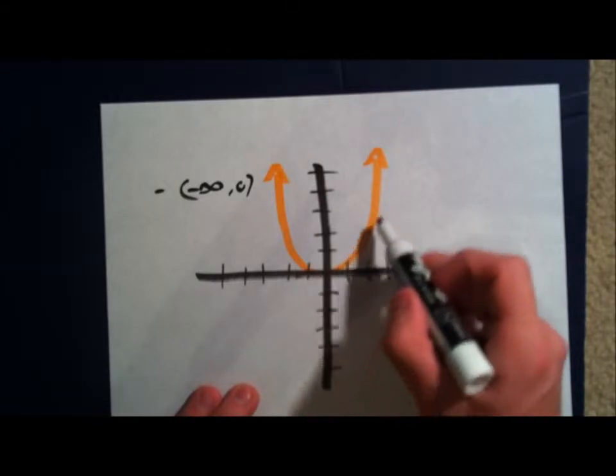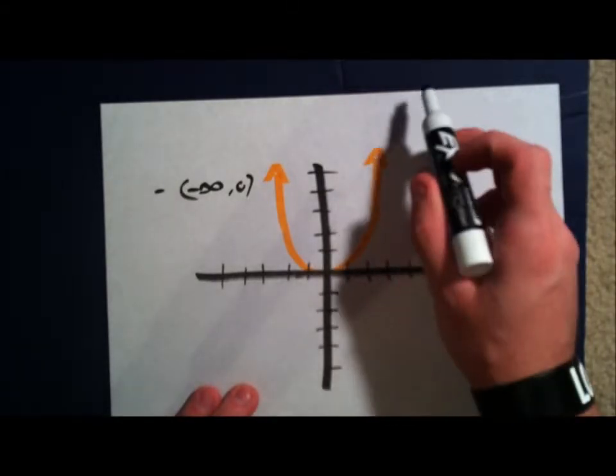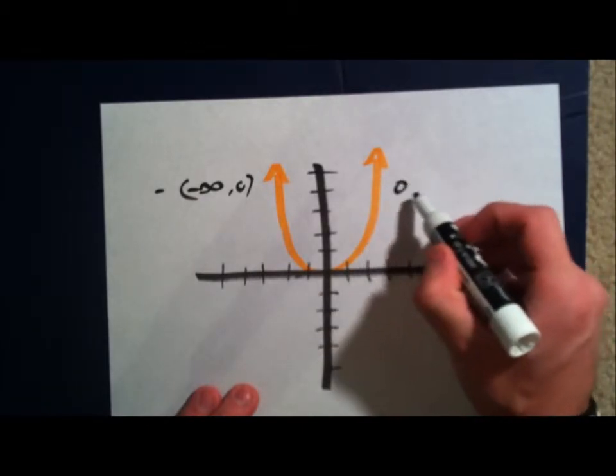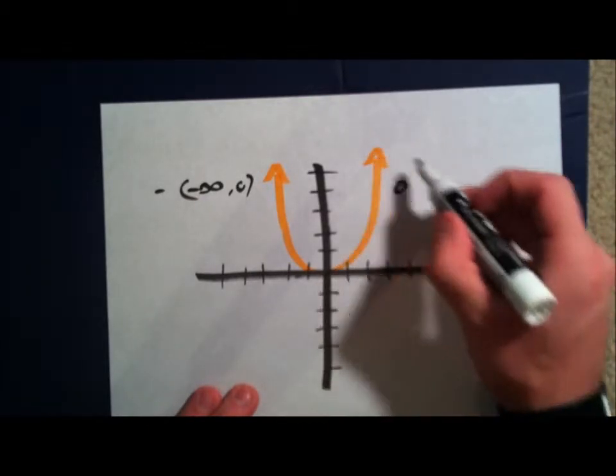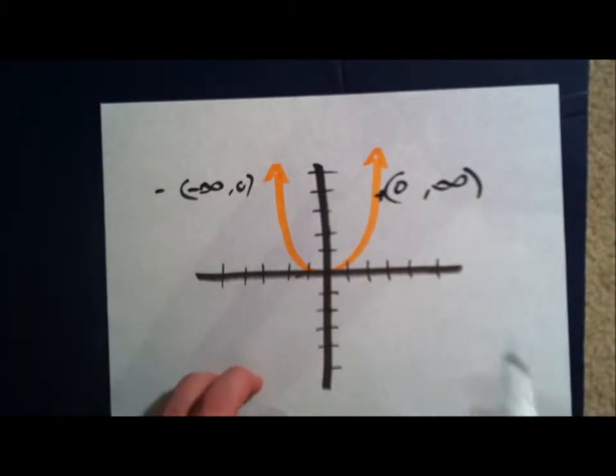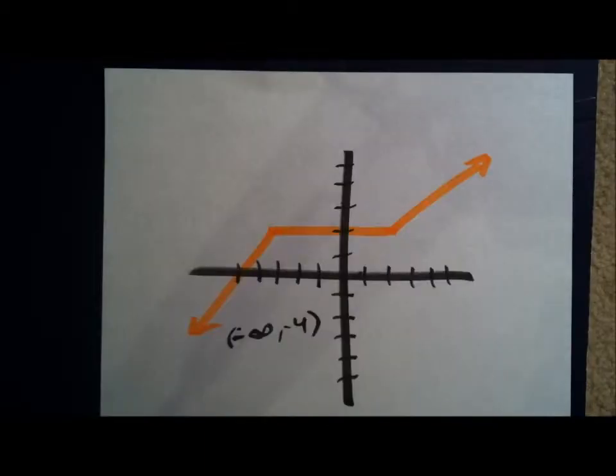Now, the other side of the graph right here, you have it carving up. All the way to infinity. So, zero. Right here. Curves all the way up to infinity. And you have a positive increase.